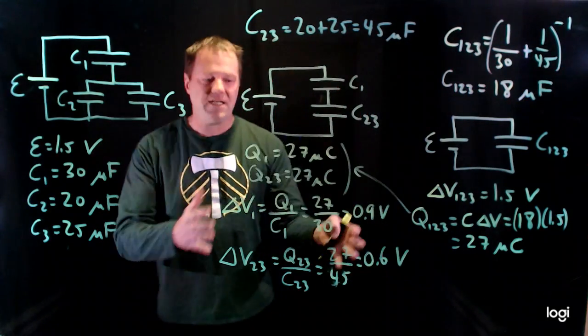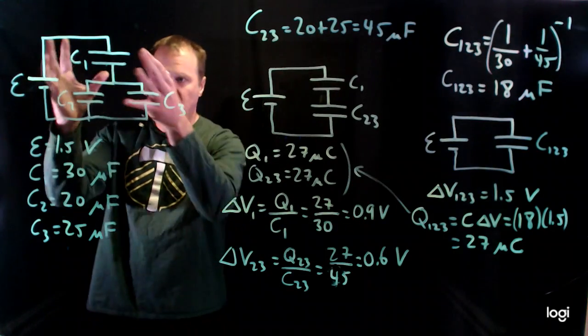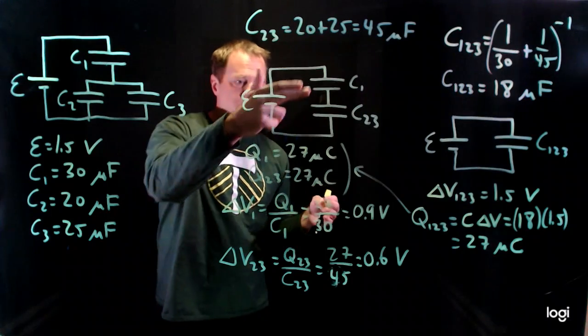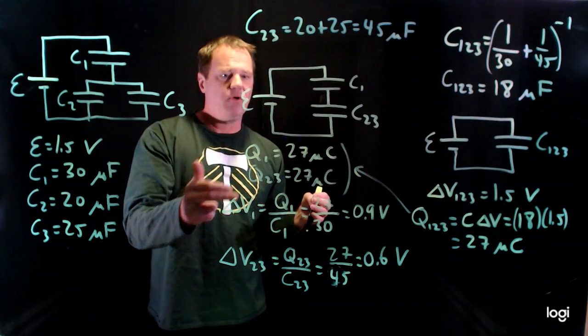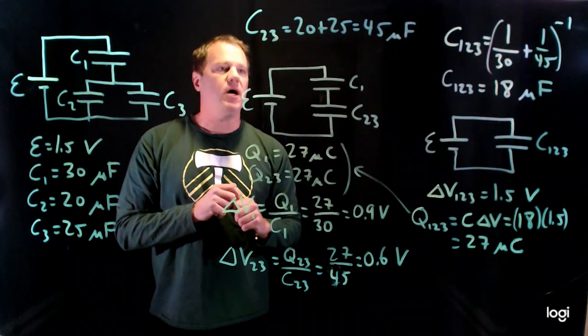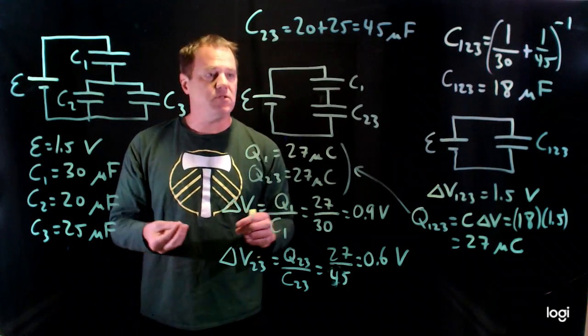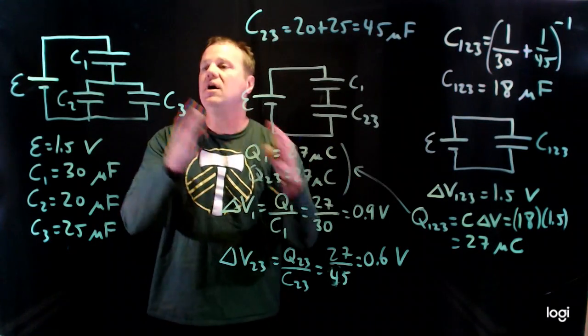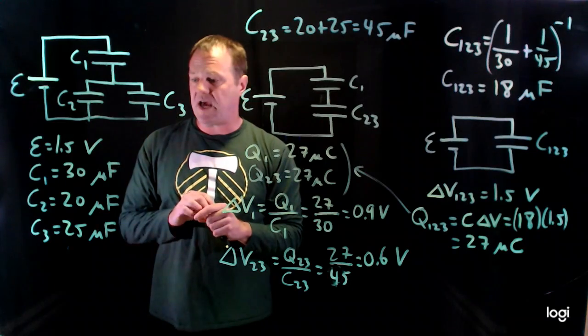So now I take this information and bring it over to the original circuit. So capacitor 1, I'm done. I know its potential difference is 0.9 volts. I know that its charge is 27 microcoulombs. I've calculated everything I've set out to calculate. But 2 and 3 aren't done. I've got the group behavior. Now I need to look at the individual, what's happening with them.